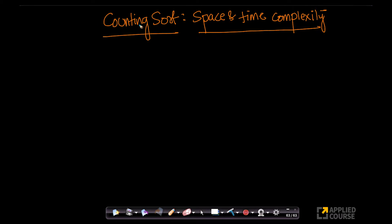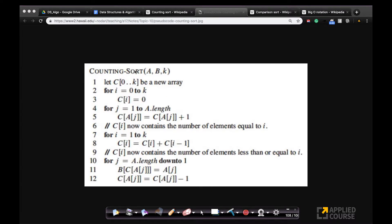We have understood what counting sort is. Now, let's go and understand the time and space complexity of counting sort. For that, we'll go to the pseudocode because it's easiest to understand in the context of the pseudocode. So let's go.